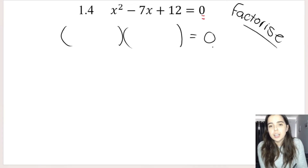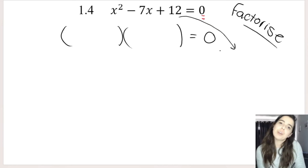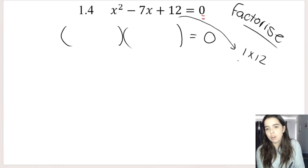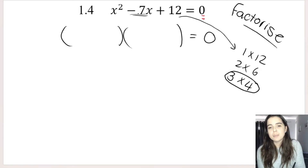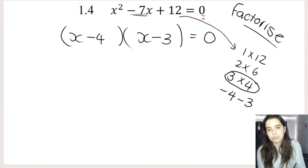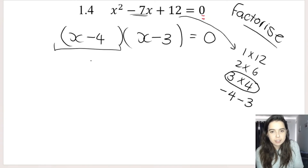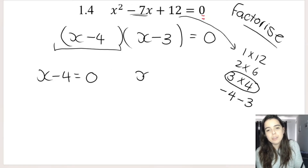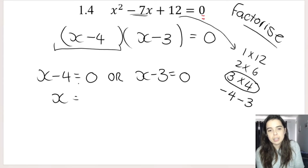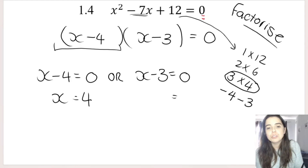I'm going to do the trinomial quickly. 12 is either 1 times 12, 2 times 6, or 3 times 4. I need to make negative 7, so I'll use 3 times 4. To make negative 7, I need negative 4 minus 3. So this factorizes to (x minus 4)(x minus 3). Now I have two brackets multiplied by each other equal to 0. My next step: take each bracket and make it equal to 0. So x minus 4 equals 0, meaning x equals 4. Or x minus 3 equals 0, meaning x equals 3.